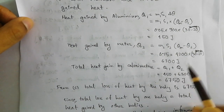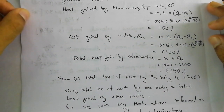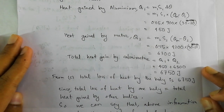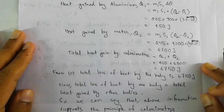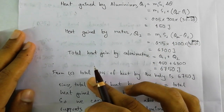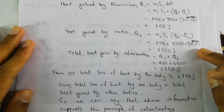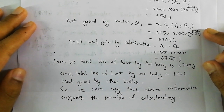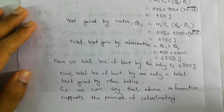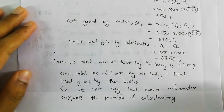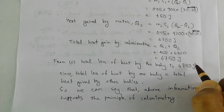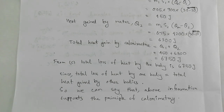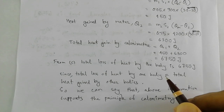The sum of Q1 and Q2 gives the total heat gained by the calorimeter, which consists of both the aluminium and the water. From part (c) we know the body placed in the calorimeter lost a certain amount of heat. In the final result, both the total heat gained and the total heat lost equal 6750 joules. Since there was no loss of heat to the surroundings, the total heat released by one body equals the total heat gained by the others.